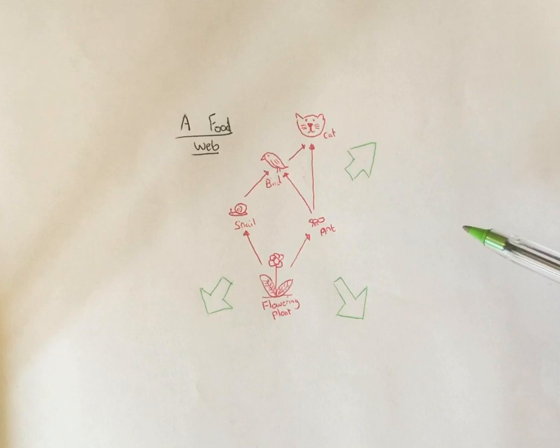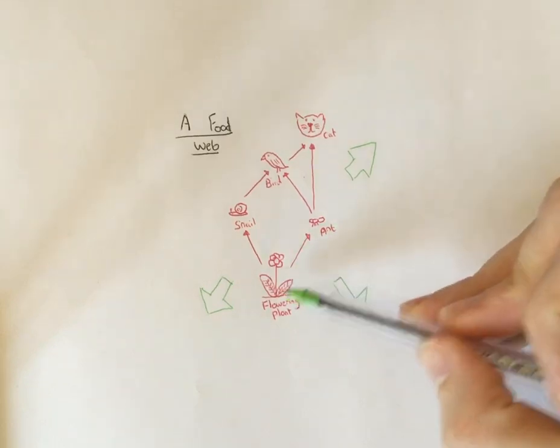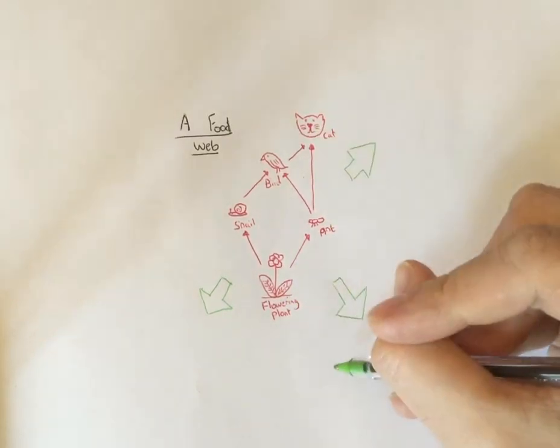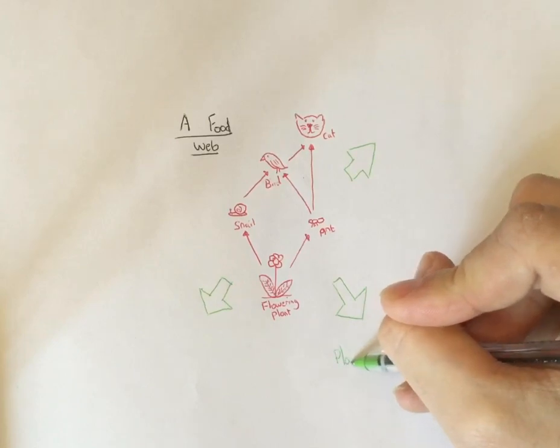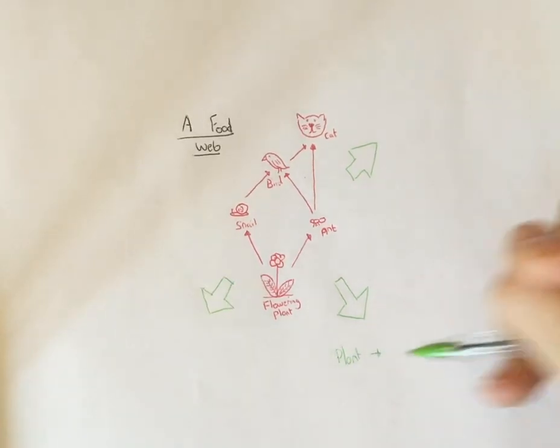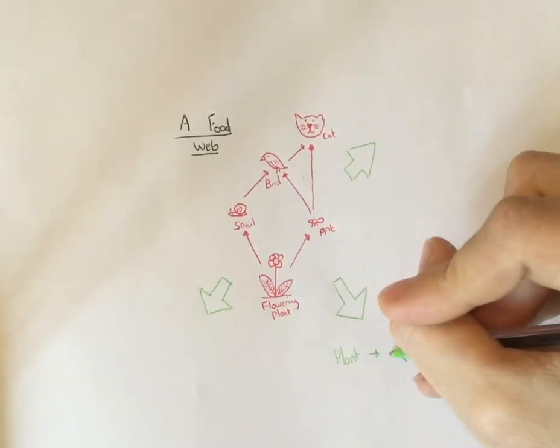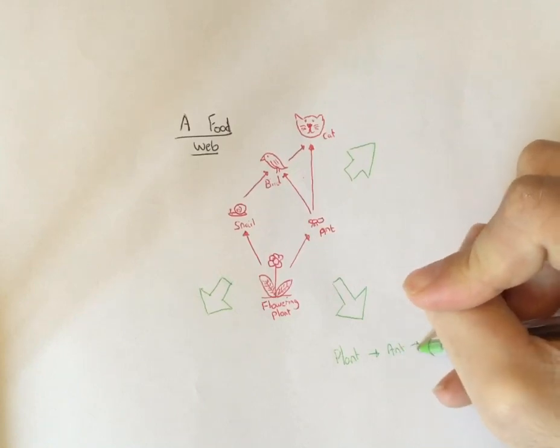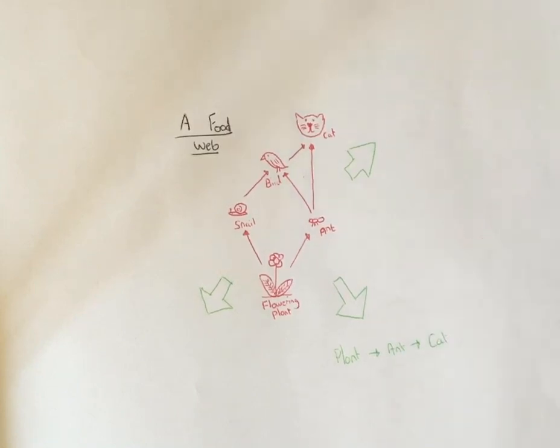So the first one we're going to do is this nice simple one here. We can have the plant which is eaten by the ant which is then eaten by the cat. That's following this bit up here, a nice simple food chain.